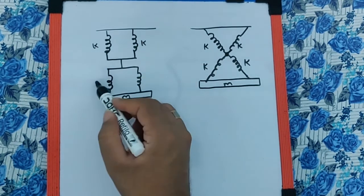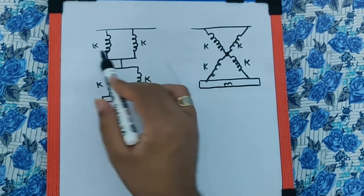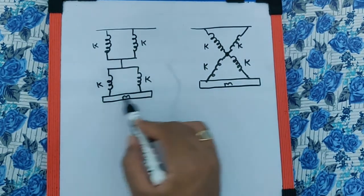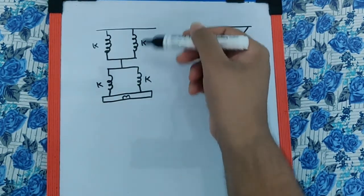So now after simplifying the diagram, we can clearly see that these two K are in parallel. These two K are also in parallel and their equivalents are in series.